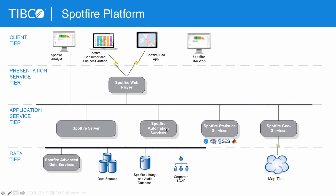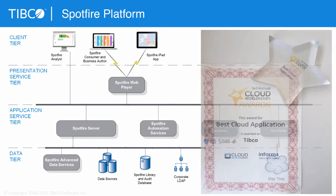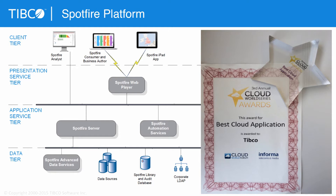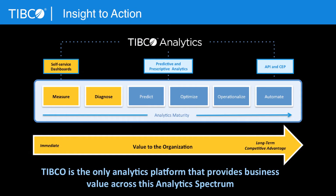That application service tier also includes our automation component, our statistics services including TIBCO-R, but also other statistics engines, and facilitating access to our geo services for geolocation and mapping capabilities. Advanced data services is our federation and virtualization layer, enabling administrative control of caching, separating the data access from the source systems if needed. A variety of data source connections and security through into the library, synchronizing with systems like Active Directory. It's a cloud-first engineering approach — four releases per year in the cloud, two releases on-premises.